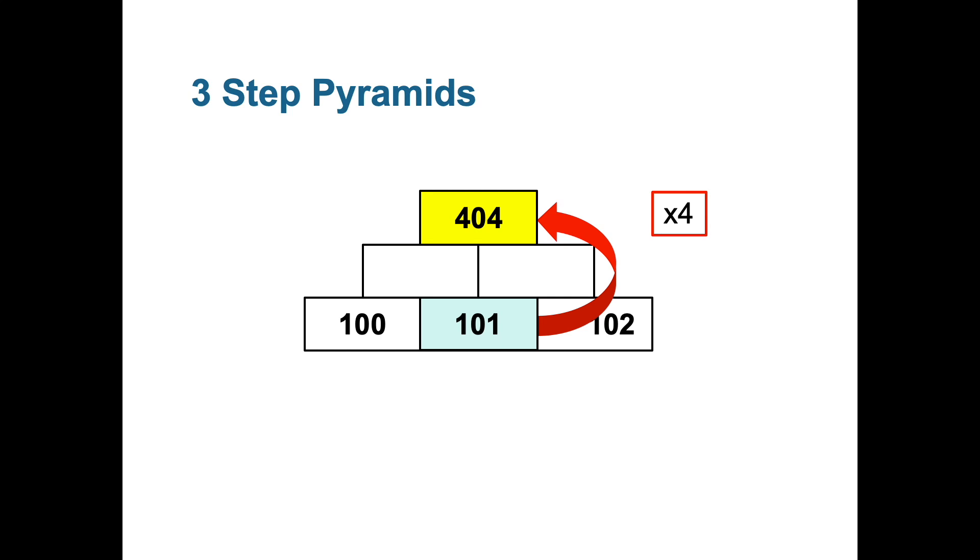If we go back to how these have been worked out before, 100 plus 101 is 201, which should give us the answer in that box. And to the right of that, 101 plus 102 would be 203, which would be answer in the other middle box.